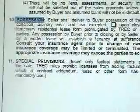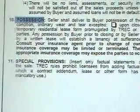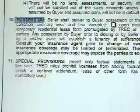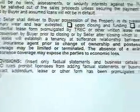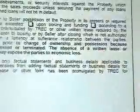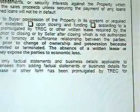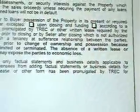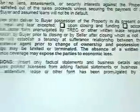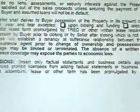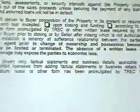Paragraph 10 is going to be when possession of the property is going to be taken over by the buyer. If it's going to be upon closing, check the first box. Or if you have come up with a different arrangement, check the second box and also provide a temporary residential lease form promulgated by TREC or a written lease required by all parties.